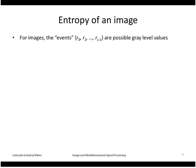To calculate the entropy of an image, in images the events are the possible gray levels. This could be, for example, the values 0 through 255. We can use the histogram to estimate these probabilities.